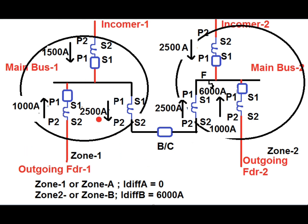Under the fault at main bus 2 condition, the zone 1 or zone A differential current is 0. Outgoing feeder 1 carries 1000 amperes from P2 to P1, incomer 1 carries 1500 amperes from P2 to P1, and 2500 amperes flows from P1 to P2 from main bus 1 towards main bus 2 via the bus coupler CT. Since the sum of the first two currents is exactly opposite to the bus coupler CT current, the zone A differential current is 0 and zone 1 remains under stable condition.